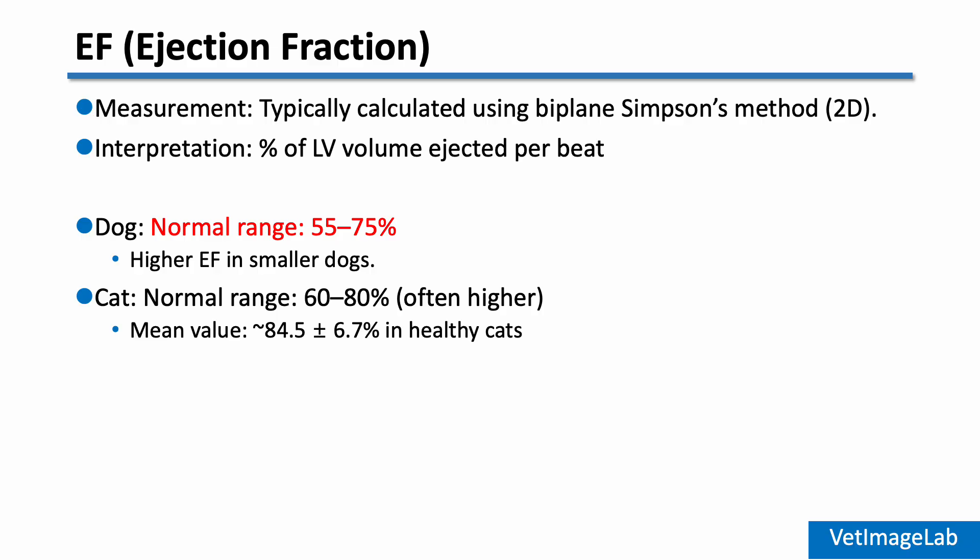In cats, EF is generally higher. The typical range is around 60 to 80 percent, but it can be higher in healthy cats.